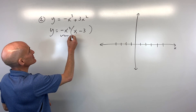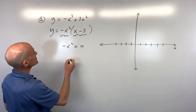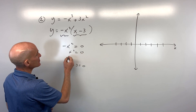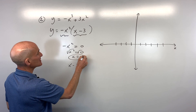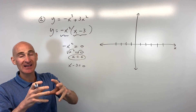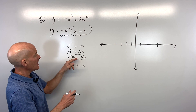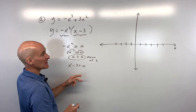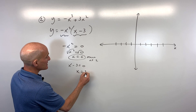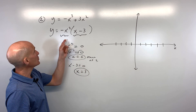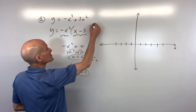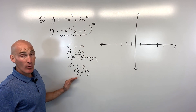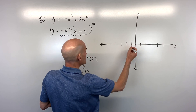Set the factors equal to zero: negative x squared equals 0 gives x equals 0, and x minus 3 equals 0 gives x equals 3. Notice that x squared means x occurs twice — a multiplicity of 2 at x equals 0. x equals 3 occurs only once. Plot these zeros on the x-axis: 0 and 3.